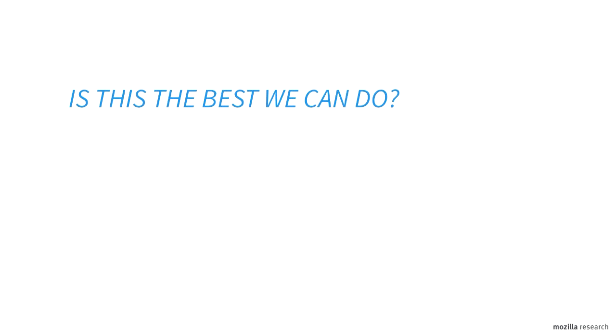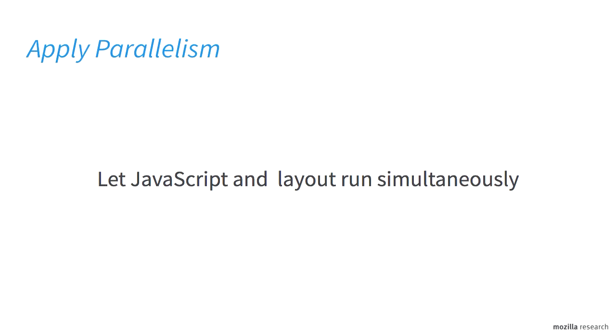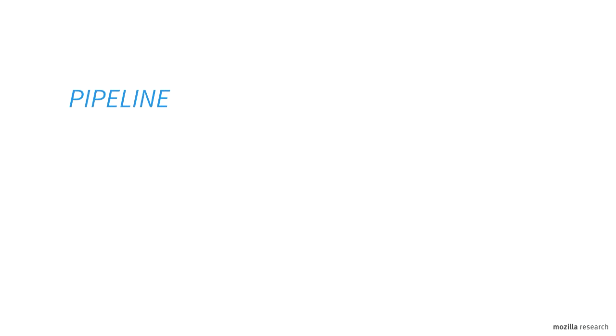But is this the best we can do? And of course, Betteridge's Law says the answer is no. What we can do is apply even more parallelism. What if we actually split up this one execution unit into multiple things that can run independently? Like, what if we can get JavaScript to run and the layout and graphics stuff to run all at the same time? Wouldn't that be great? We call this the pipeline.